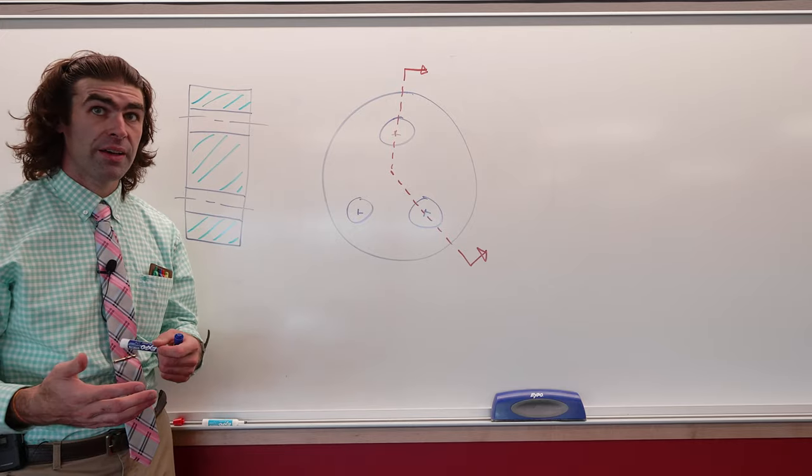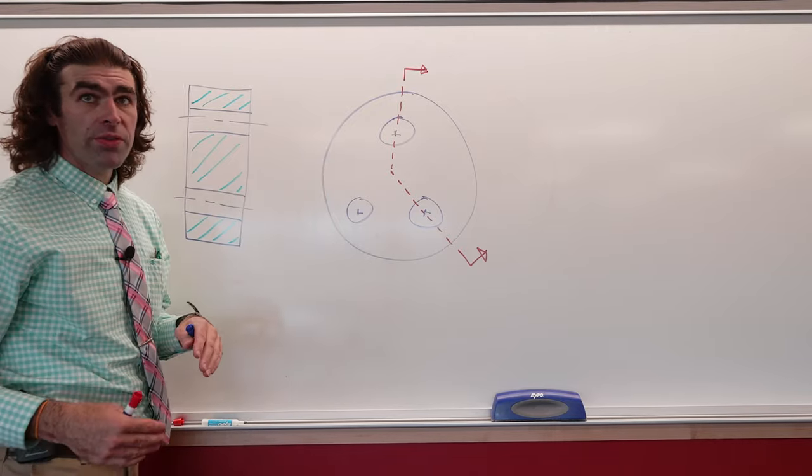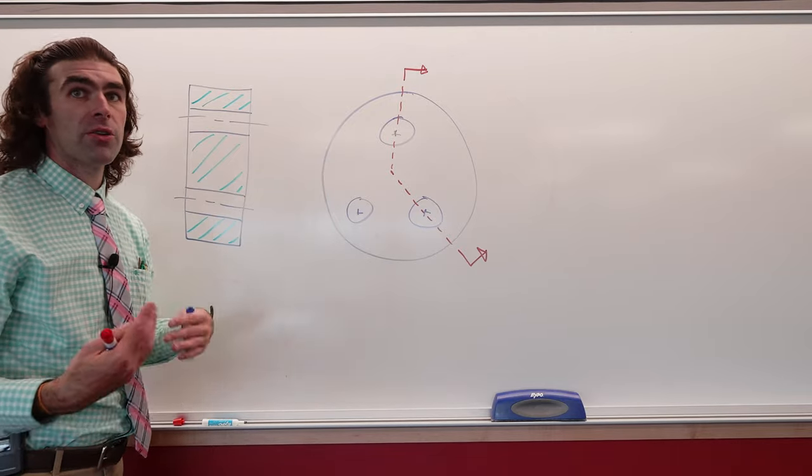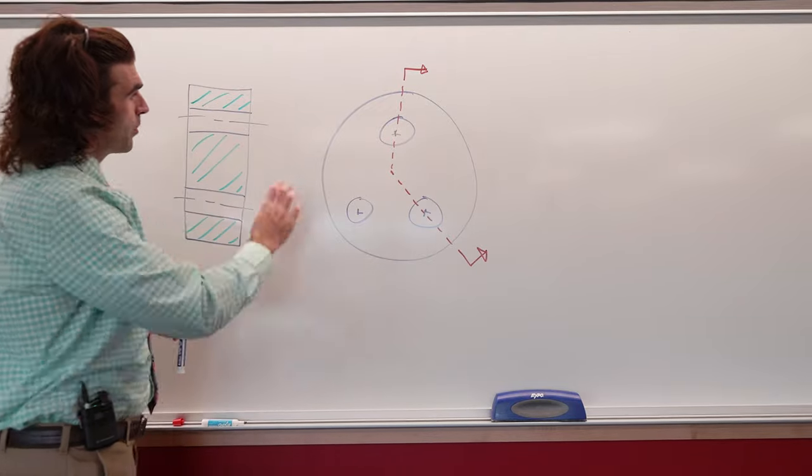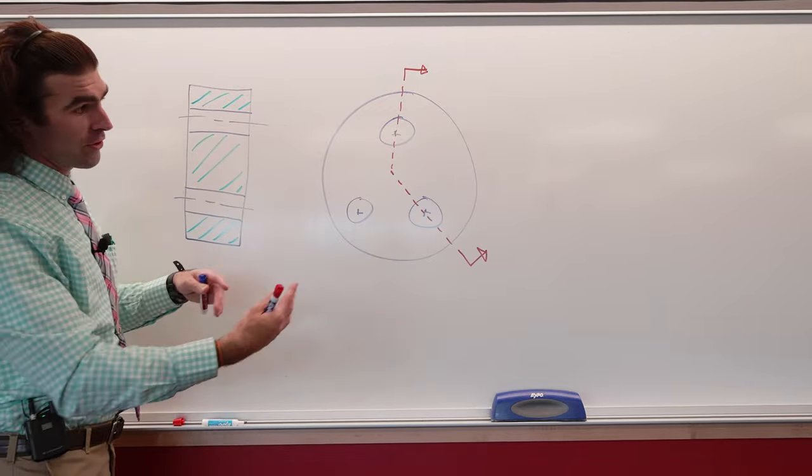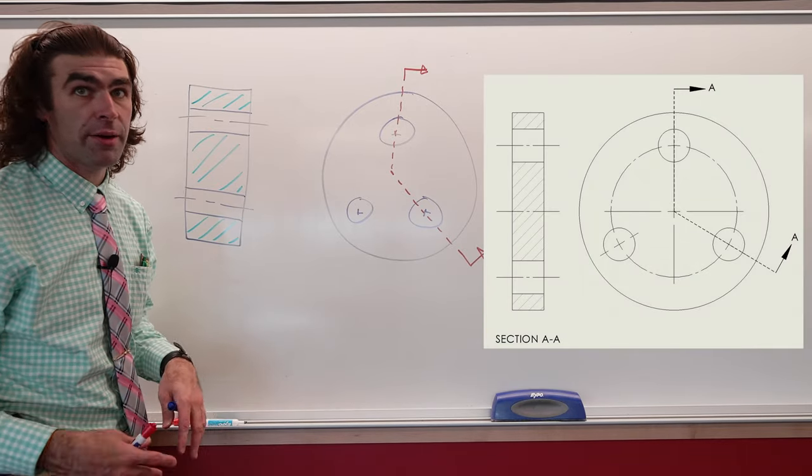This is kind of a convention. You wouldn't want to show a view with one of the holes. It wouldn't describe the part correctly. The angle, all the dimensions will be here. You could put the size of the holes here, but this just makes the drawing more clear and it won't always be three holes. It could be five, seven, any odd number.